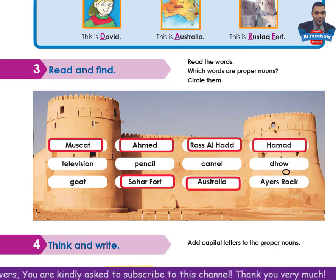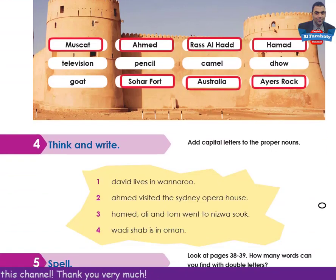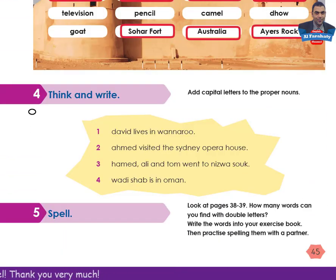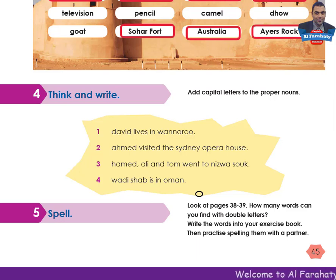Dhow — no. Iris Rock — yes. Activity 4: think and write. Add capital letters to the proper nouns. You are asked to punctuate these sentences. Take your time, do the activity, then come back to check your answers.